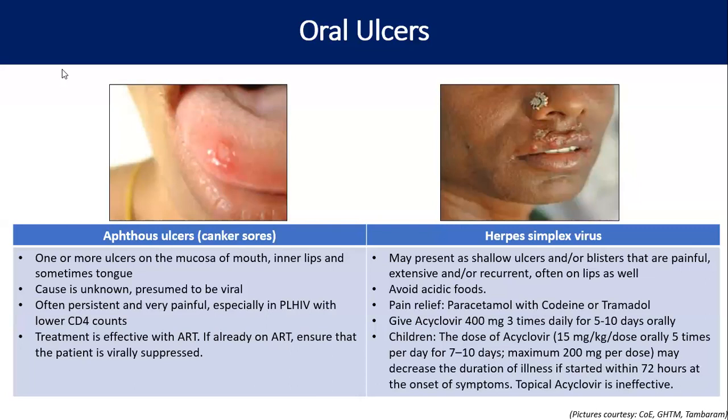For herpes simplex, treatment is acyclovir 400 mg three times a day for 5 to 10 days. For children, it is 15 mg/kg per dose orally five times a day for 7 to 10 days — the difference being that in adults it is three times a day, while for children it is five times a day. We should remember that topical acyclovir is not effective for oral herpes.